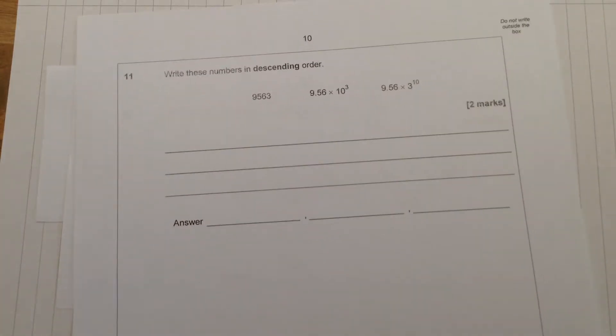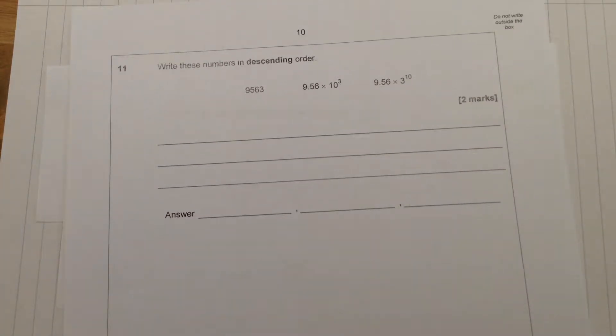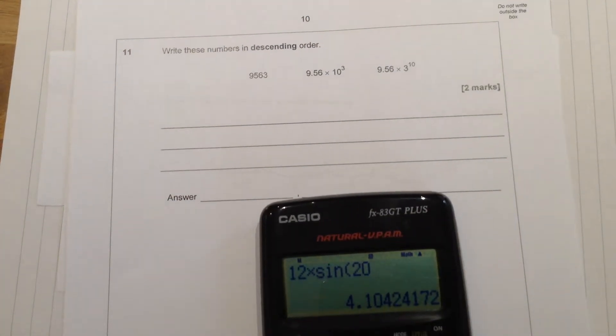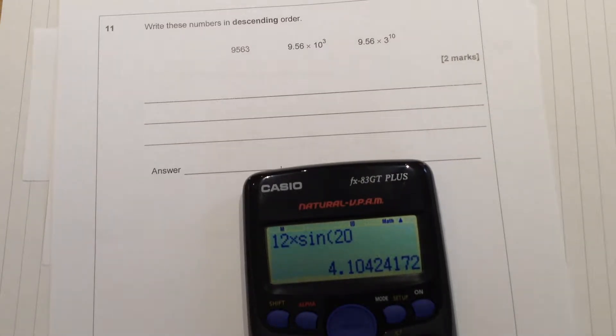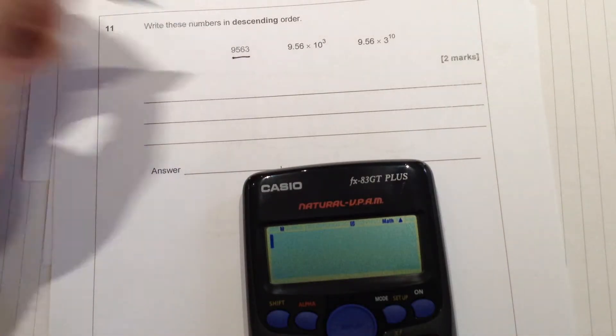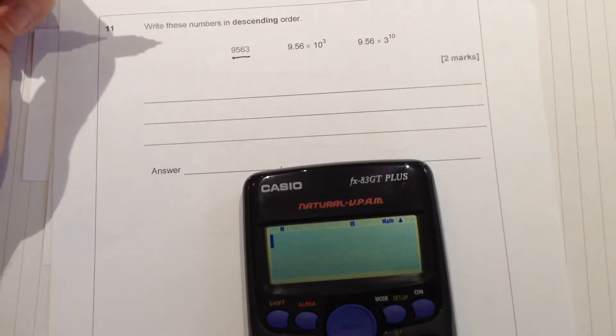Here's the next question. Remember this is a calculator paper. So here with this being a calculator paper, it means we can actually just type in each of these if we need to. So obviously the first one, we know what that number is already, it's given us in normal form.